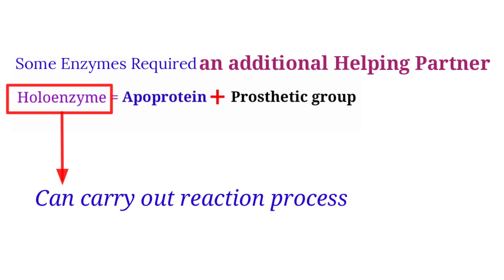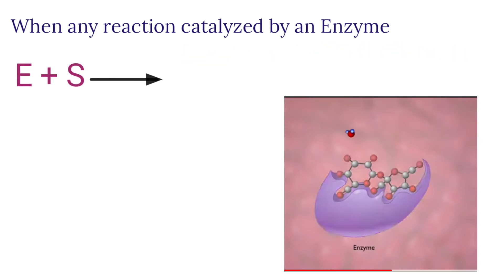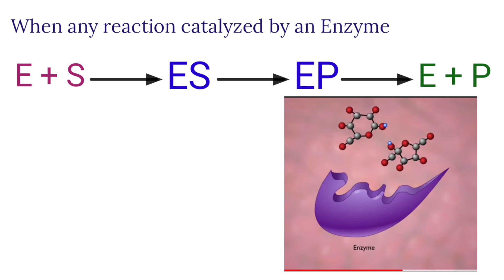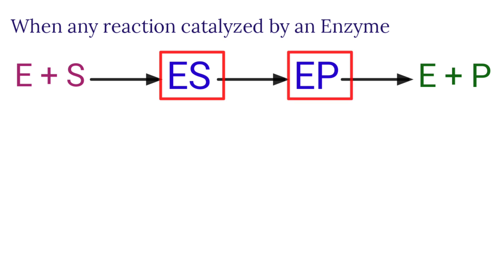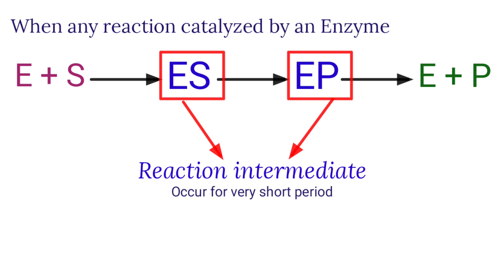When any reaction is catalyzed by an enzyme, the enzyme binds to the substrate and produces an enzyme-substrate complex, which is converted into the enzyme-product complex, and finally the enzyme releases the products. The enzyme-substrate complex and enzyme-product complex are known as reaction intermediates, which occur for a very short, transient period of time.